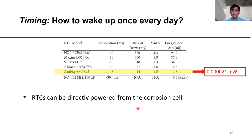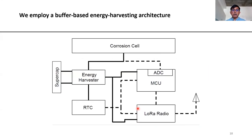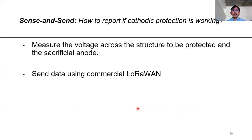For the timing aspect, we use real-time clocks (RTCs), whose power consumption is very low — lower than a corrosion cell. The main challenge is how to carry out the actual health data reporting operation. For that, we employ a buffer-based energy harvesting architecture using a supercapacitor as an energy buffer, buffering our trickle power source to power a microcontroller that carries out sensing and a radio that transmits the health data. What we measure is the voltage between the sacrificial anode and the structure to be protected, since this potential difference indicates the protection capability of the cathodic protection system, transmitted using a commercial LoRa radio.